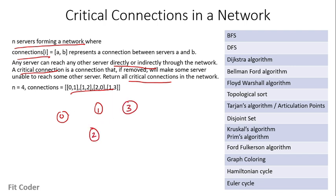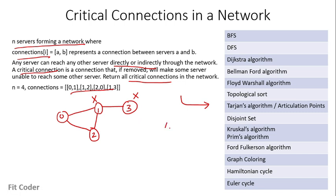Drawing this as a graph: four vertices 0, 1, 2 and 3, with edges between 0 and 1, 1 and 2, 2 and 0, and 1 and 3. To find critical connections we need to find the articulation points or cut vertices using Tarjan's algorithm. We have to find those vertices whose removal will make the graph disconnected. If we remove vertex 1 the graph becomes disconnected, and if we remove vertex 3 the graph also becomes disconnected because there is no other way to reach those vertices. So 1 and 3 are the articulation points, found using Tarjan's algorithm.